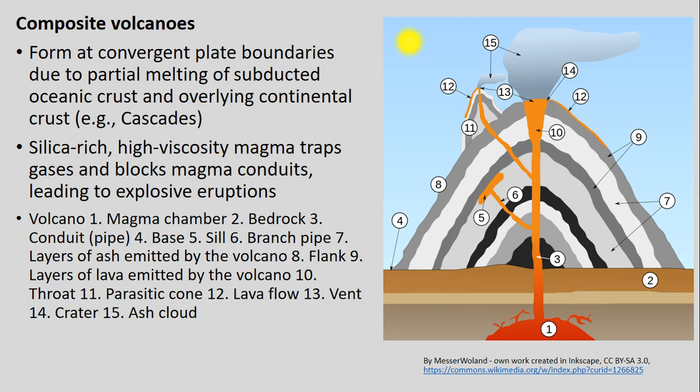Another type of volcano, and one of the most common — especially thinking about the Cascade Mountains — is the composite volcano. Now we're at convergent plate boundaries, where we have that partial melting of subducted oceanic crust and mixing that type of rock with the overlying continental crust. Those are two different rock types, and when they mix together we get silica-rich, high-viscosity magma — that mixing of viscosities is what actually leads to very explosive eruptions in the types of volcanoes we have in the Cascade Mountains.